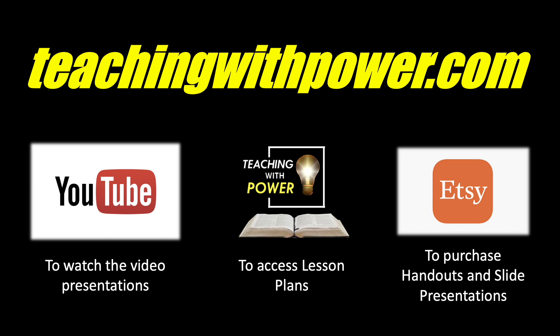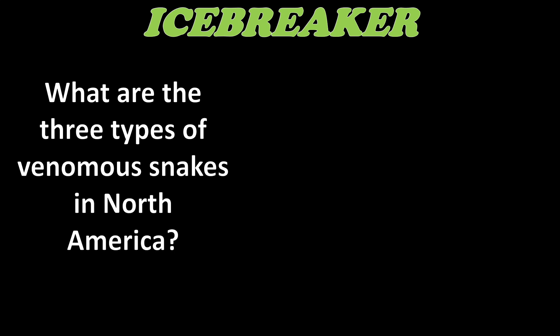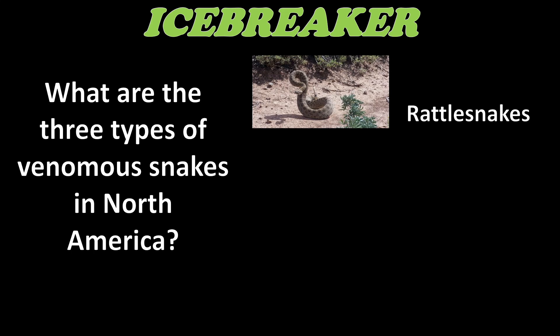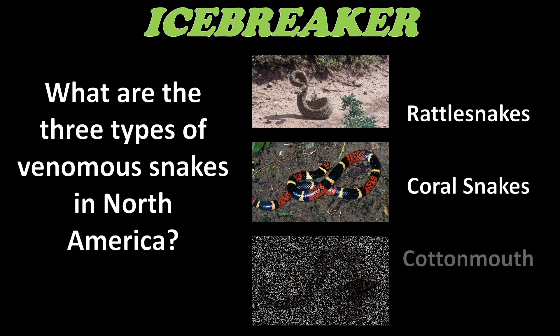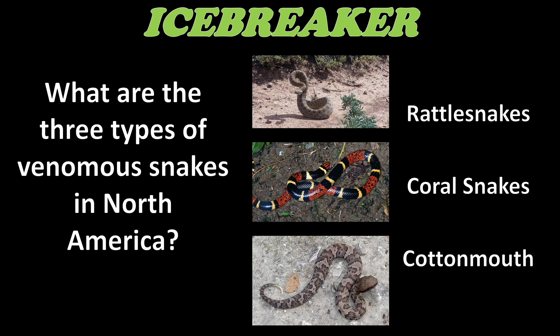I like to begin this lesson by talking about snakes. There are basically three types of venomous snakes in North America. Can you name them? The answers would be rattlesnakes, coral snakes, and the cottonmouth. If you are bitten by one of these snakes, it's recommended that you get to a hospital as soon as possible to receive treatment with an antivenom. These antivenoms are capable of countering the venom and saving your life.